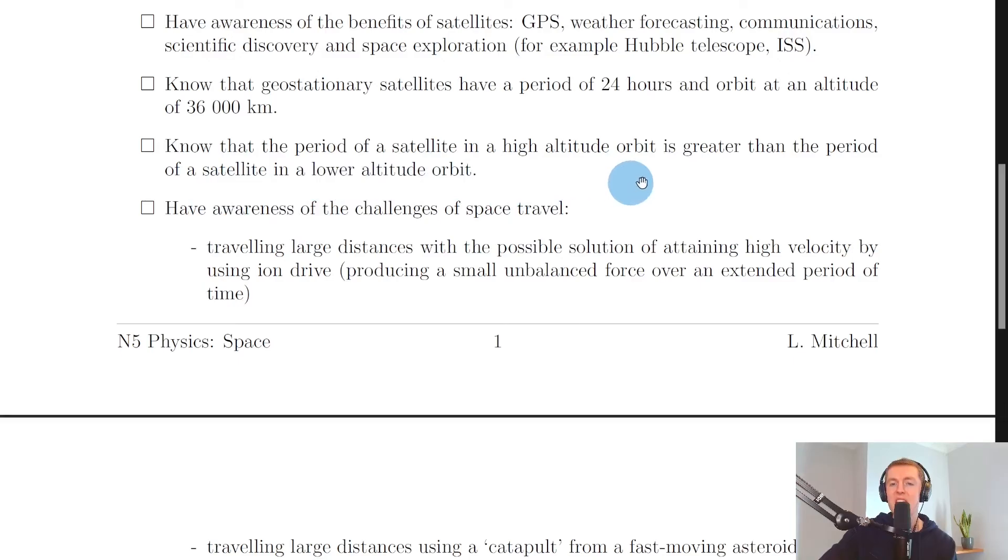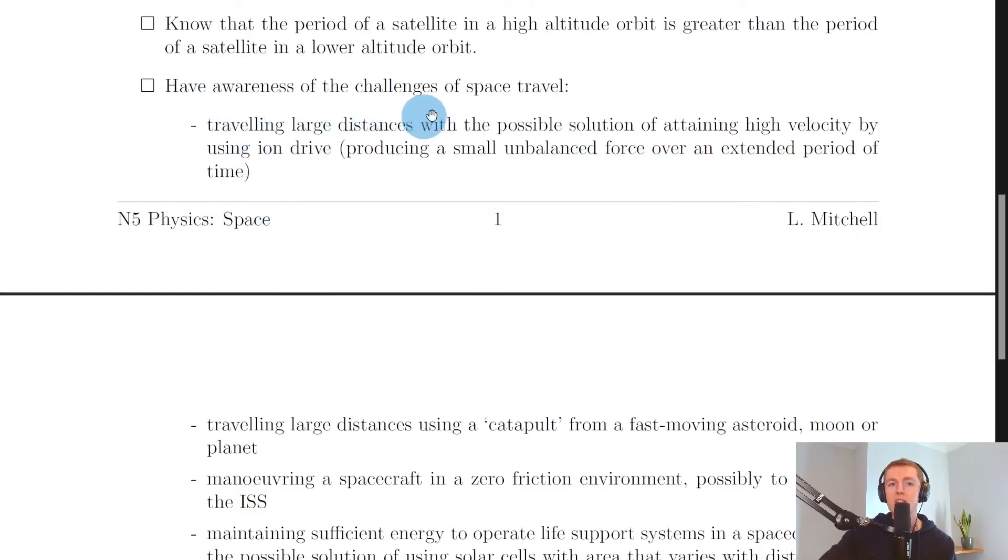Moving on, it says to know that the period of a satellite in a high altitude orbit is greater than the period of a satellite in a lower altitude orbit. This idea comes from Kepler's third law, where we're saying that satellites closer to a planet will take a shorter time to orbit that planet as they have a shorter distance to travel, whereas satellites further away from the planet will take a longer time to orbit the planet, and that's due to them traveling a greater distance.